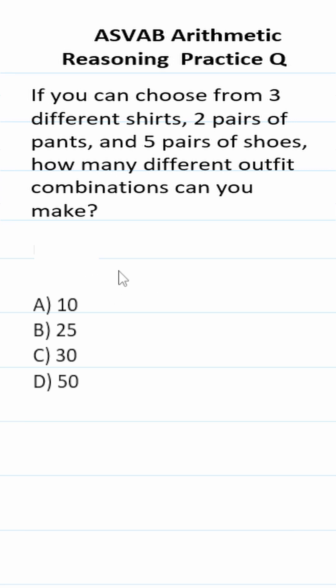So this question is testing your understanding of the fundamental counting principle, which says this: If you have n number of ways to do one thing and m number of ways to do the other thing, then you have n times m number of ways to do those things together.